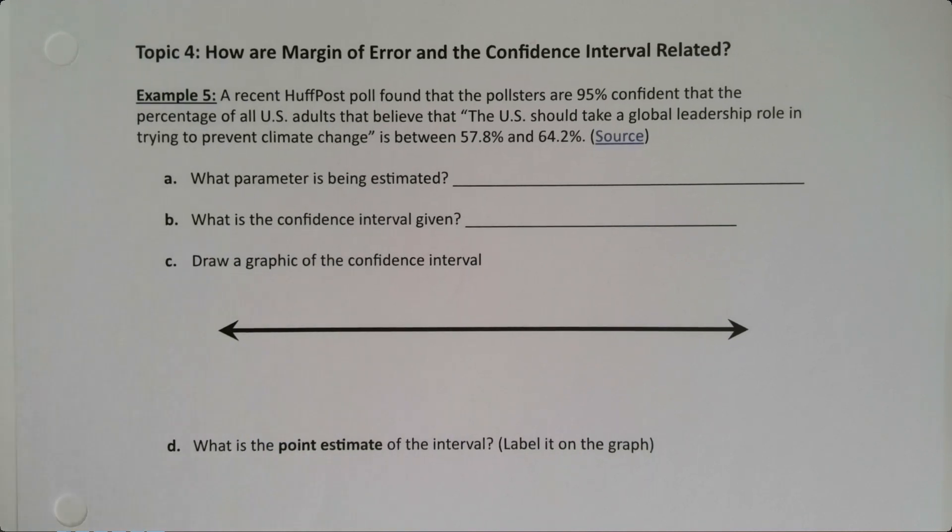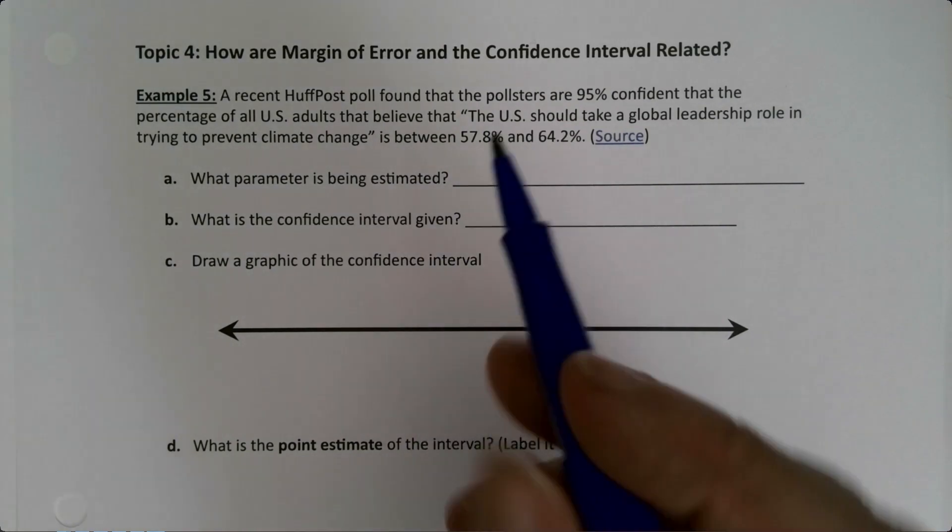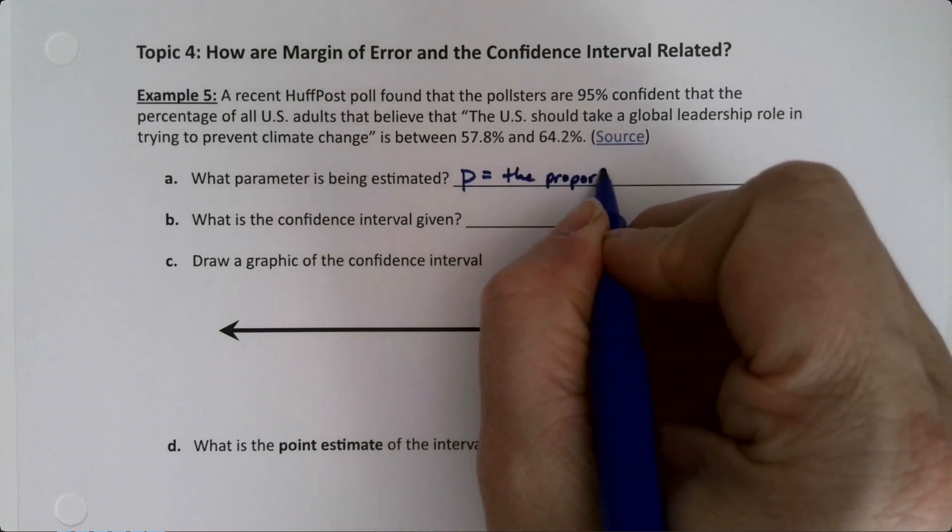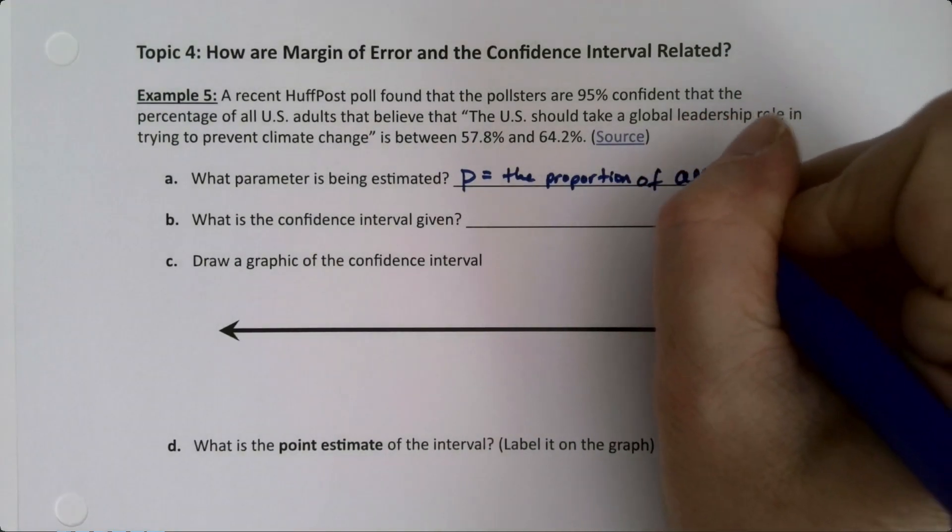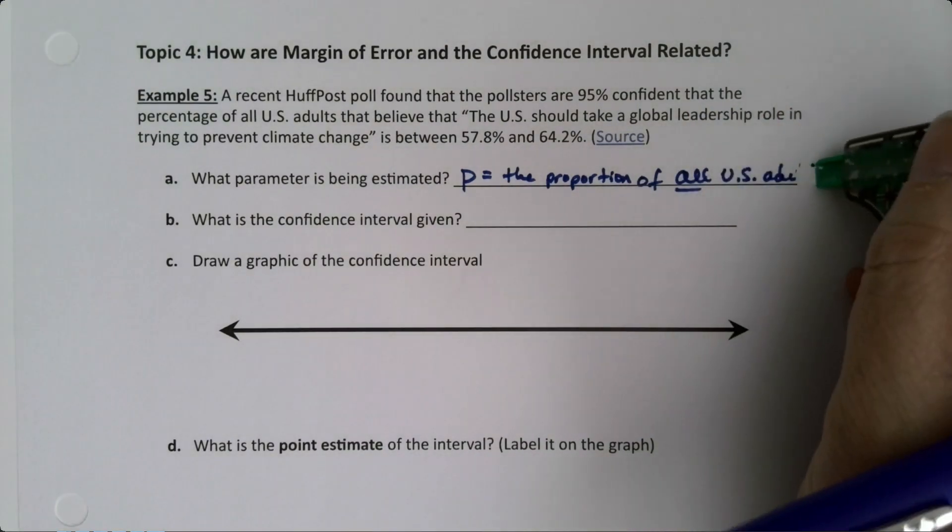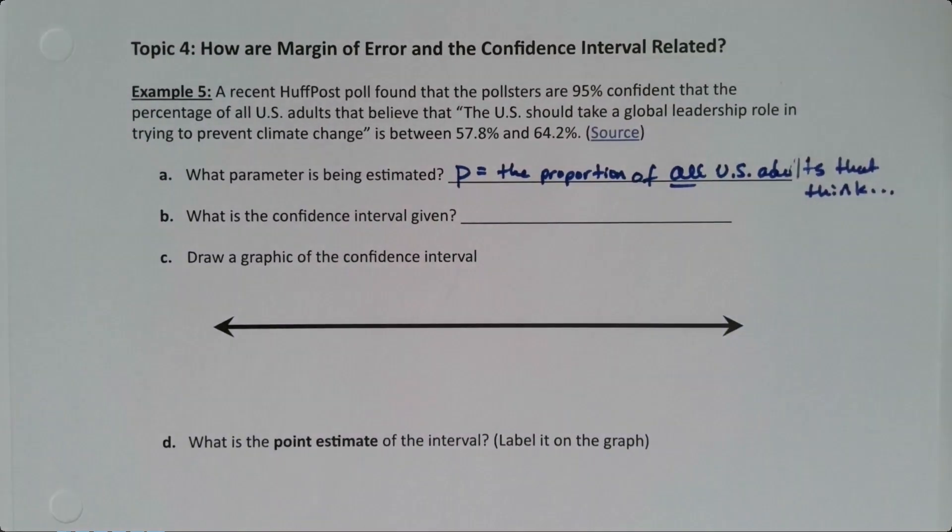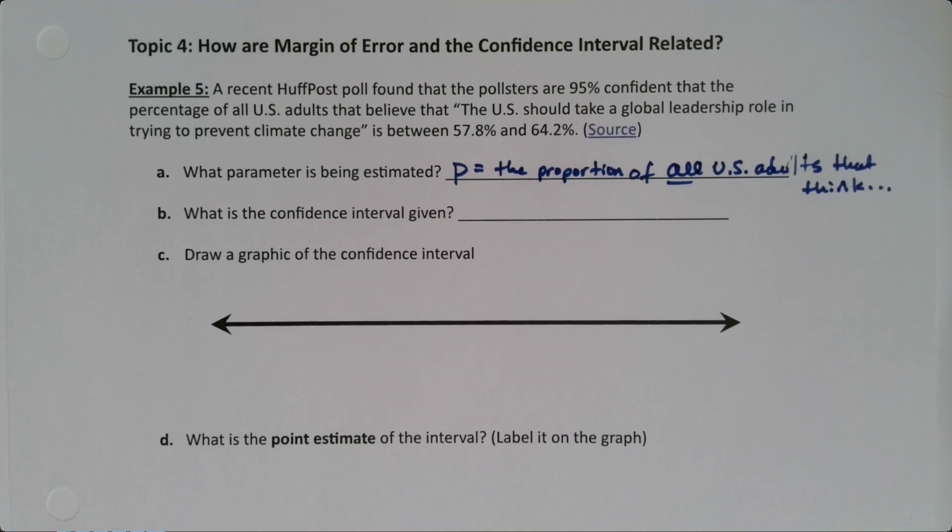Okay, so first thing, what is this trying to estimate? What is this talking about? Well it's obviously talking about a percentage because we've got percentages here, so it's really the proportion P. So it's trying to estimate P, which is the proportion of all U.S. adults that think—and I'm just gonna leave dot dot dot because I'm not gonna write all of that, but you get the idea. That's what you're looking for: what percentage, if you could talk to everybody, what percentage of them would agree with that statement or believe that statement.